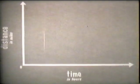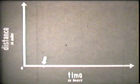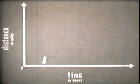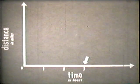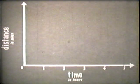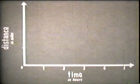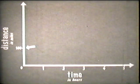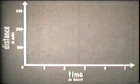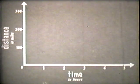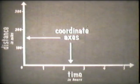On the horizontal line, which we call the time axis, a second point representing a unit of time of one hour is marked. Then points two, three, four, and five are marked to represent additional units of time. On the vertical line, which we call the distance axis, a second point representing a unit of distance of 100 miles is marked, and other points are marked on this axis to represent additional units of distance. These two axes together are called coordinate axes.